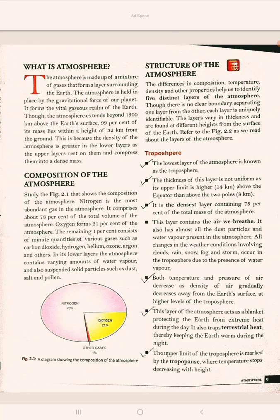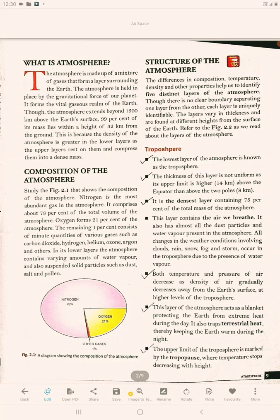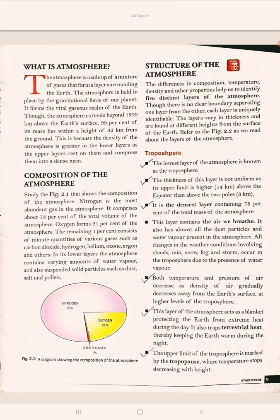The troposphere contains the air we breathe and almost all dust particles. All changes in weather conditions — involving clouds, rain, snow, fog, and storms — occur in the troposphere because water vapour is present in this layer. Both temperature and pressure of air decrease as density of air gradually decreases away from the Earth's surface at higher levels of the troposphere.